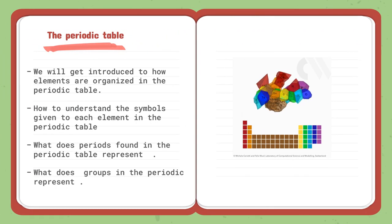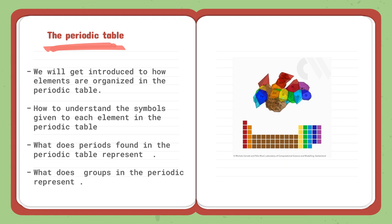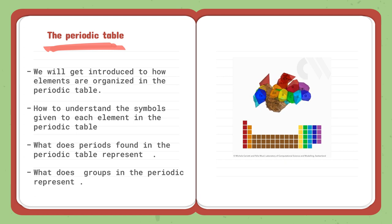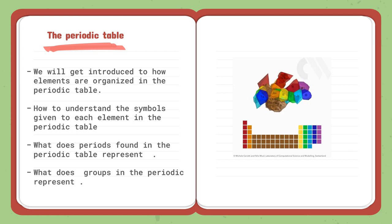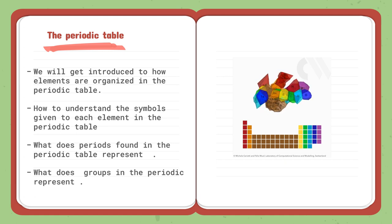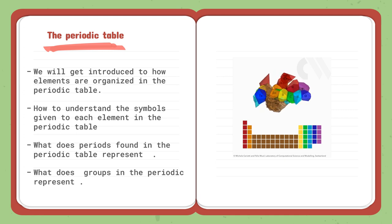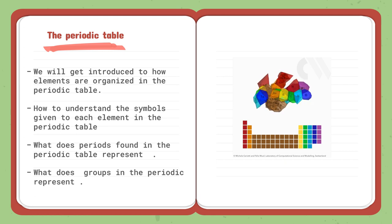The second lesson is the periodic table. We will get introduced to how elements are organized in the periodic table, investigate the symbols given to each element, including the chemical symbol and atomic mass. We will look at the rows, called periods, and classify elements within each period, including transuranium elements. We will also look at the groups of the periodic table, divided into metals, non-metals, and metalloids.